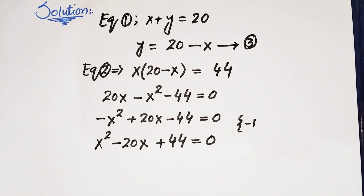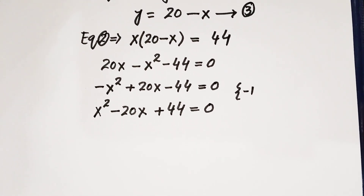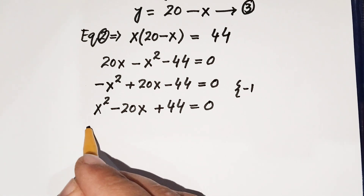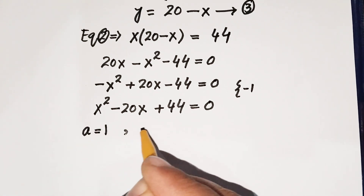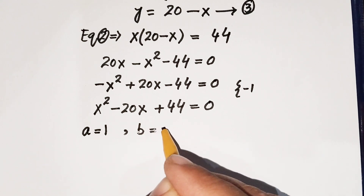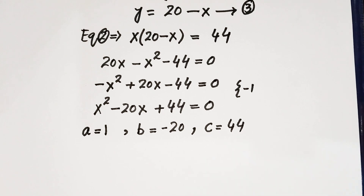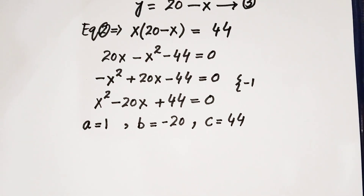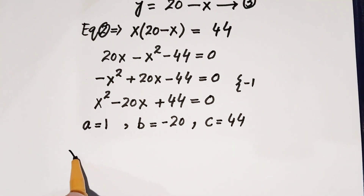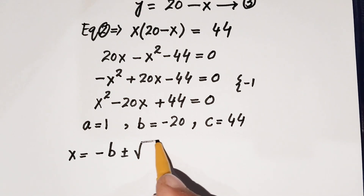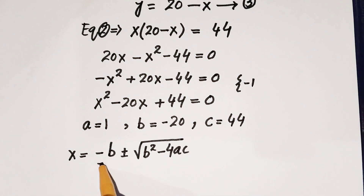This is a quadratic equation, so we find the value of x using the quadratic formula. Here a is equal to 1, b is equal to minus 20, and c is equal to 44. The quadratic formula is x equals minus b plus or minus the square root of b squared minus 4ac, all over 2a.